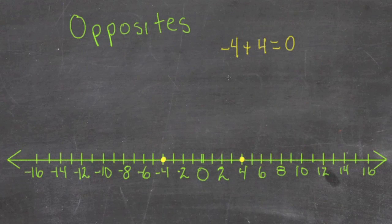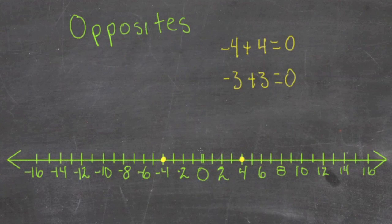If we take a look at, say, negative 3 and positive 3, they're 0. You'll see that negative 3 is 3 places to the left of 0, and positive 3 is 3 places to the right of 0. Opposite positions on the number line.